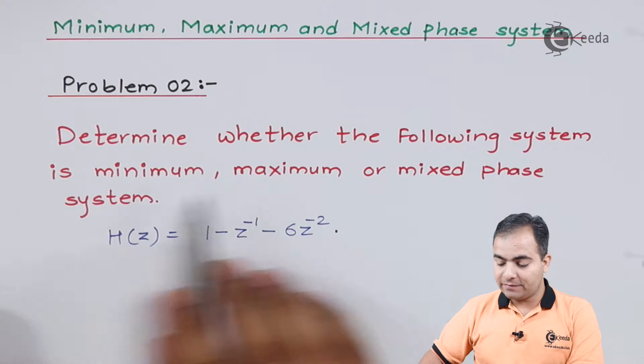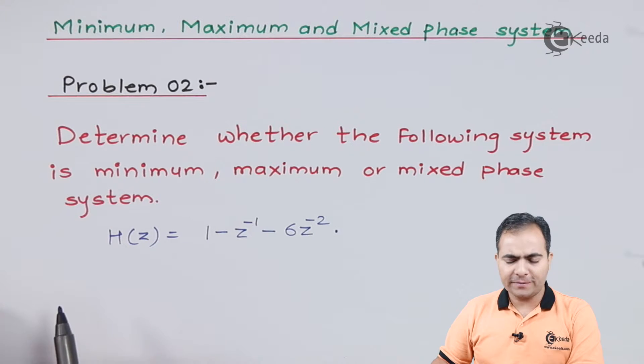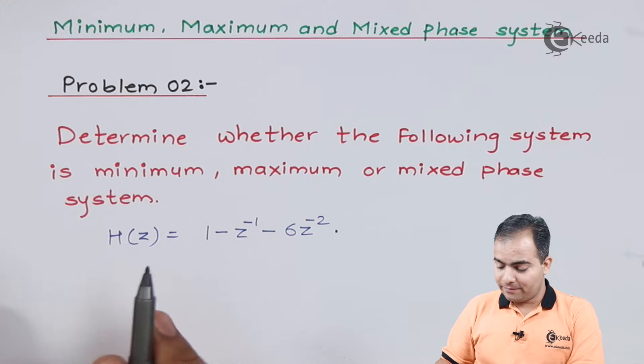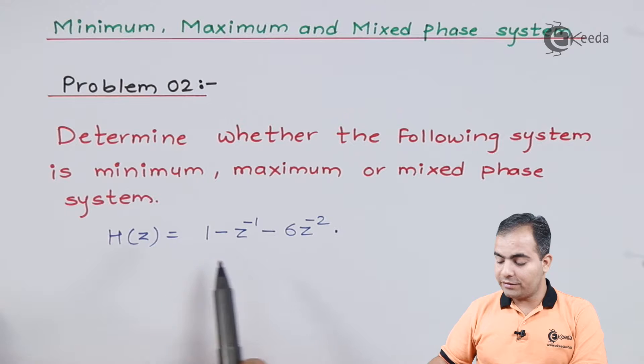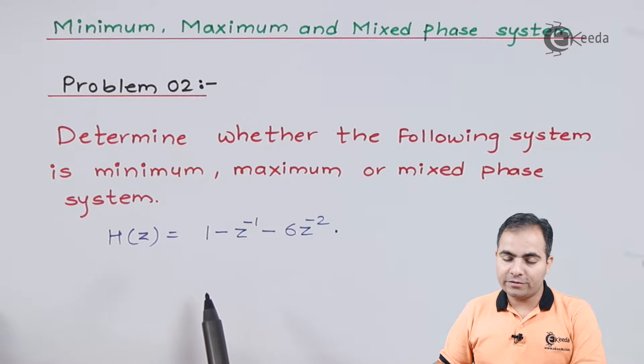Determine whether the following system is minimum, maximum, or mixed phase system. The question title will remain same, only the function will change. Here the function is given: H(z) equals 1 minus z inverse minus 6z to the minus 2.